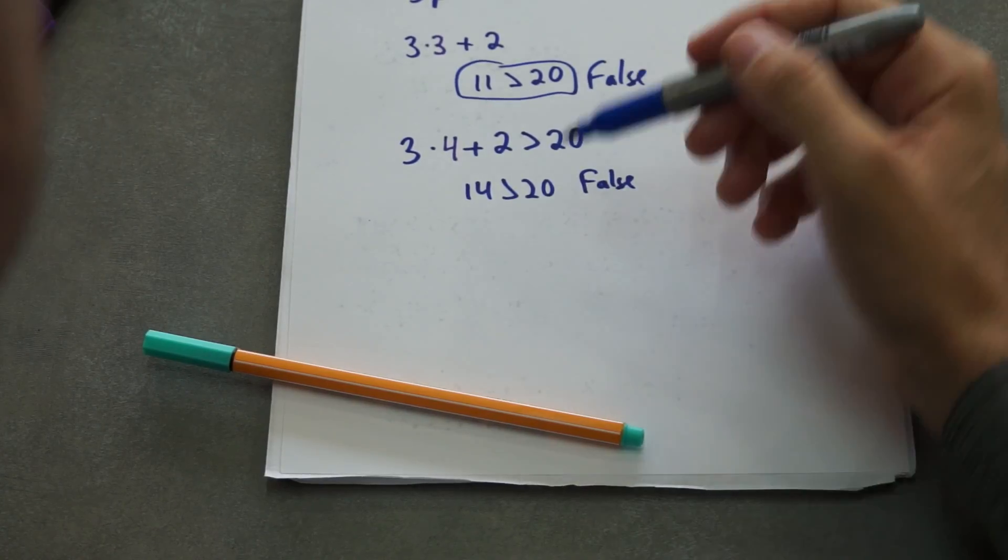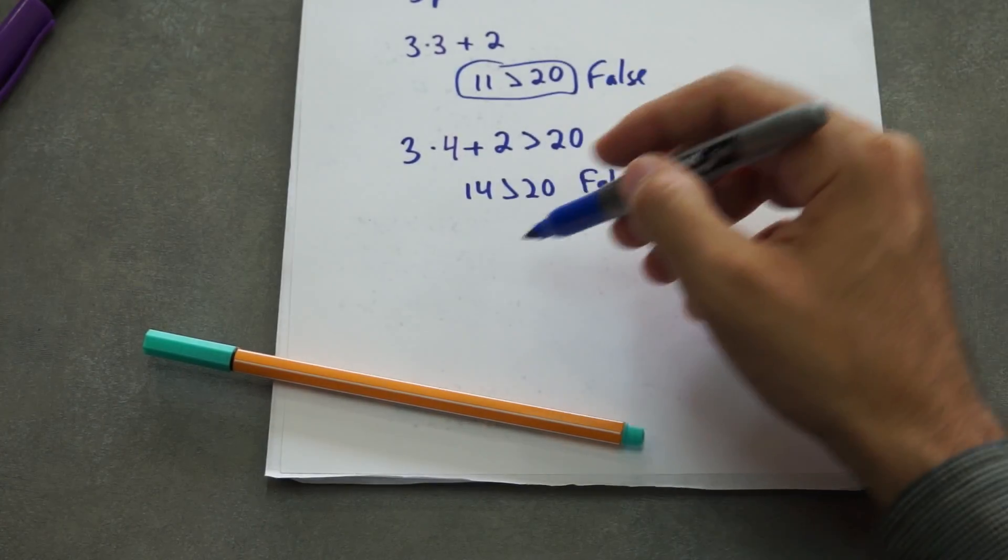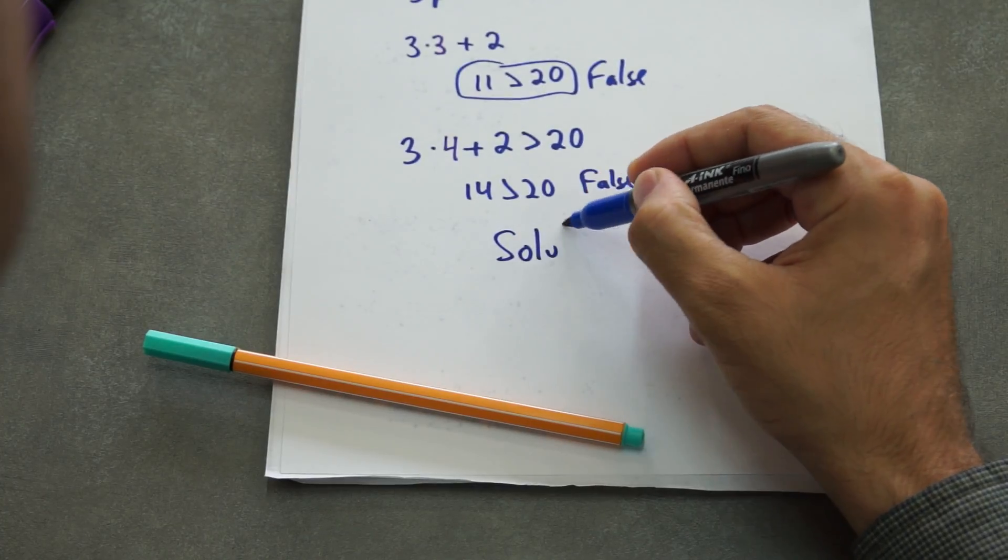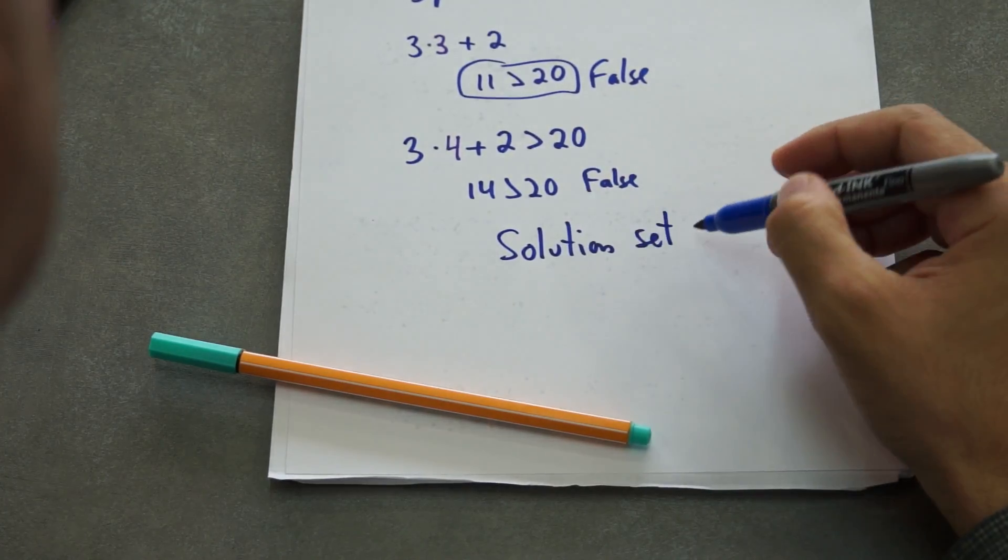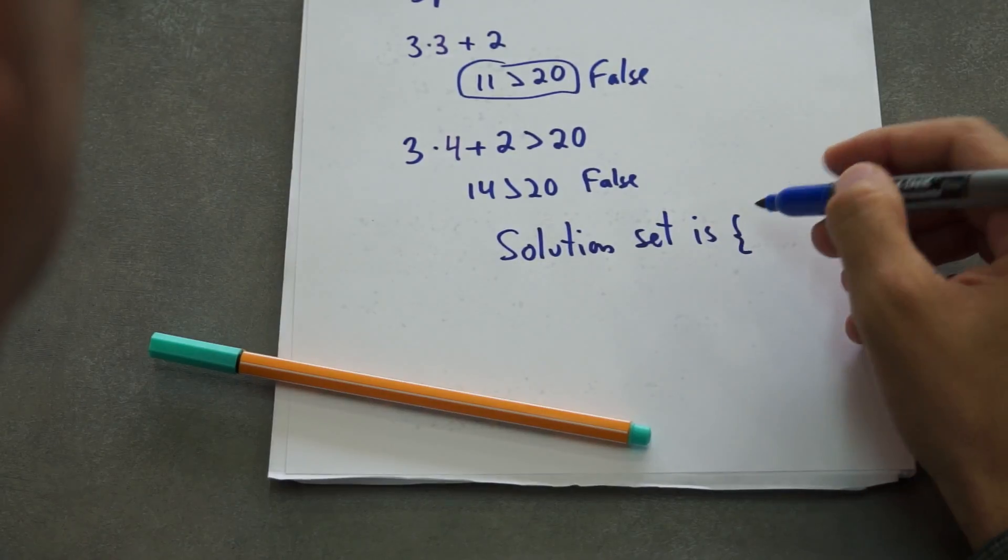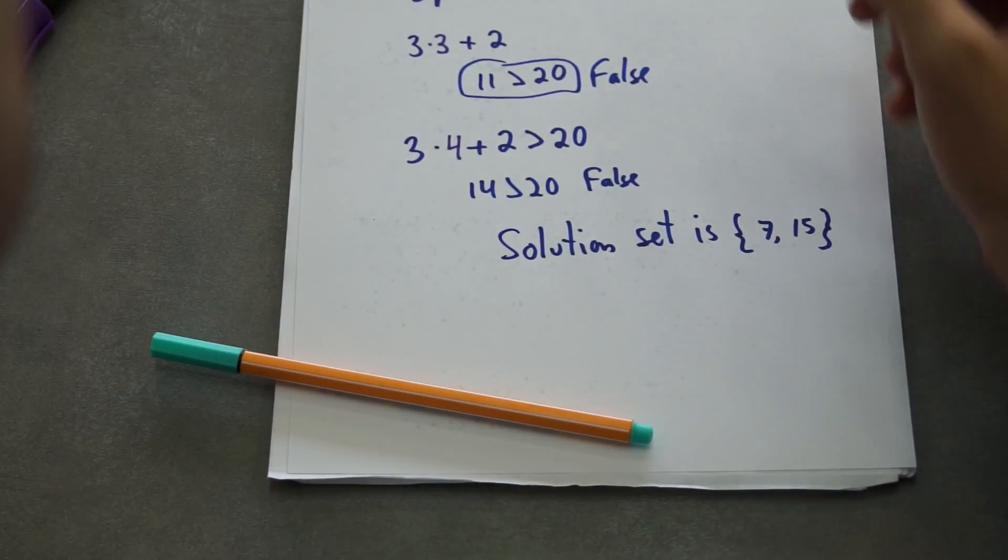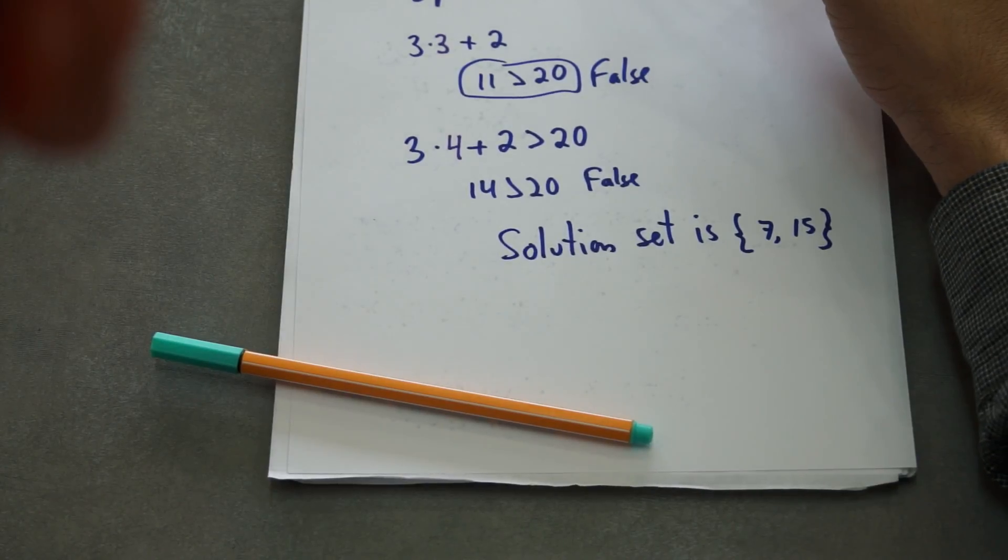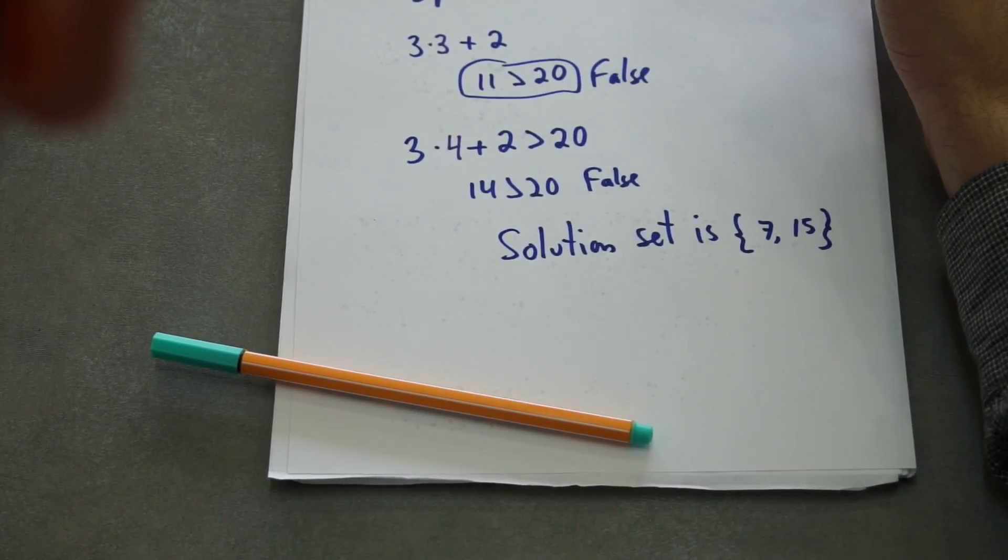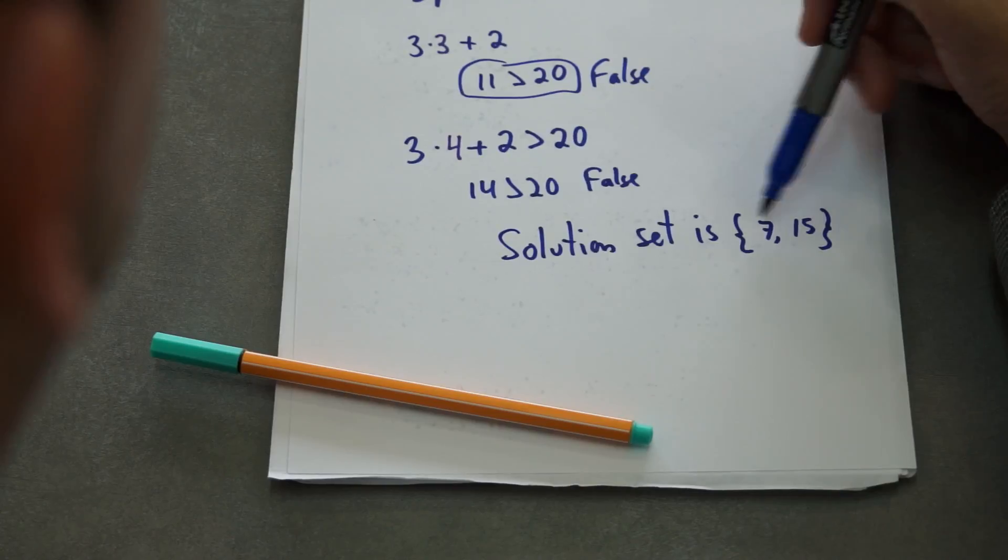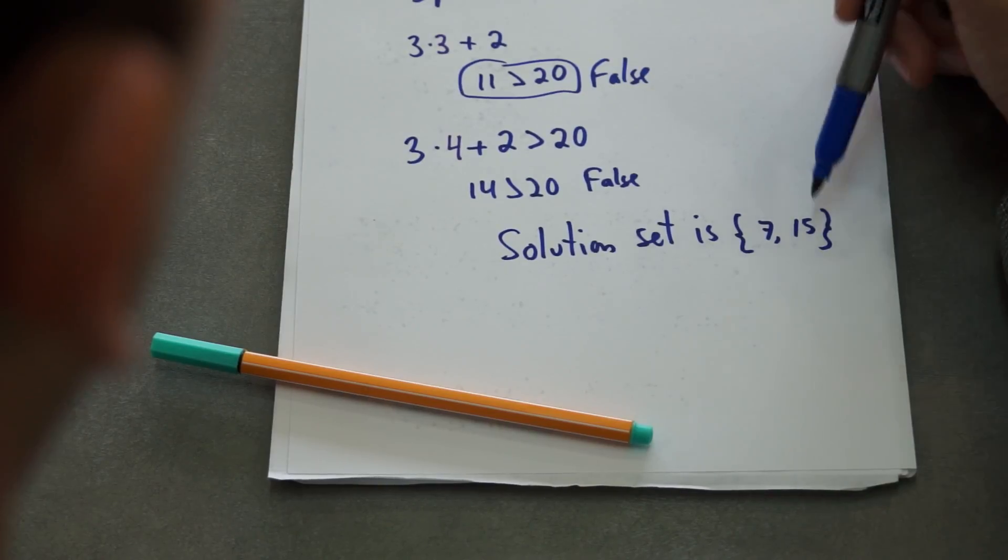We say that the solution set for this, in this case, solution set is just 7 and 15. This is the solution set. This is the set, but this is the solution set, just those two numbers.